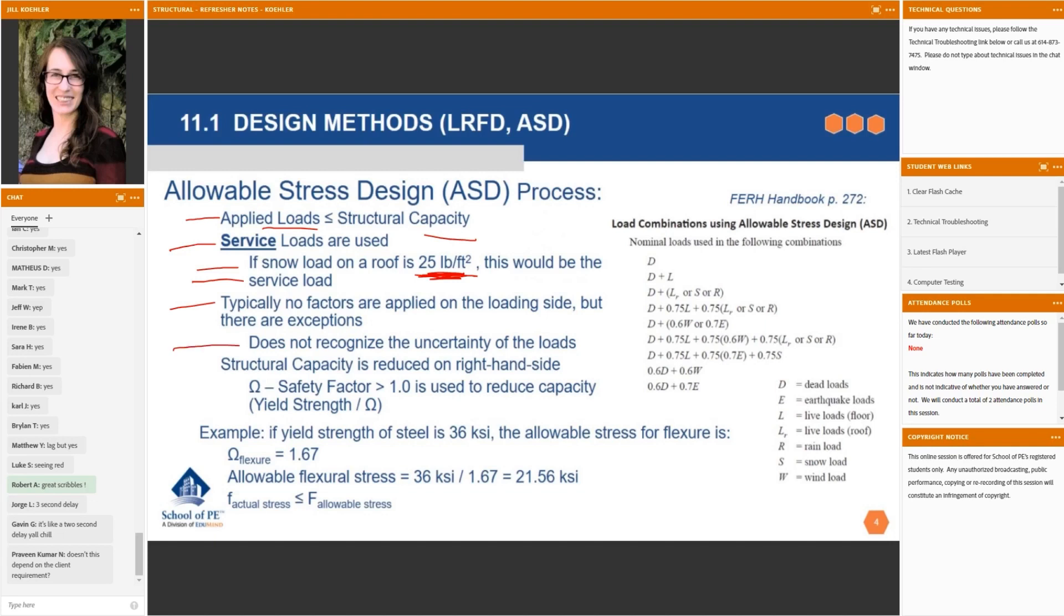ASD does not recognize the uncertainty of the loads. And this is one of the drawbacks. This is one of the reasons we're moving away from it—it's not quite as precise, at least on the loading side. The structural capacity is reduced on the right-hand side or the capacity side of the inequality. So this is where we make our modifications in ASD.